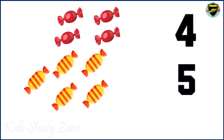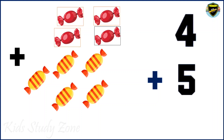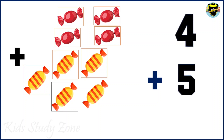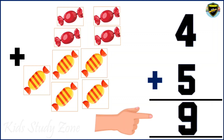Now we need to add them. And for addition, the sign of addition is plus sign. Now when we add these 2 digits, we need to calculate. Let's start from the beginning: 1, 2, 3, 4, 5, 6, 7, 8, 9. Therefore we have total 9 candies.